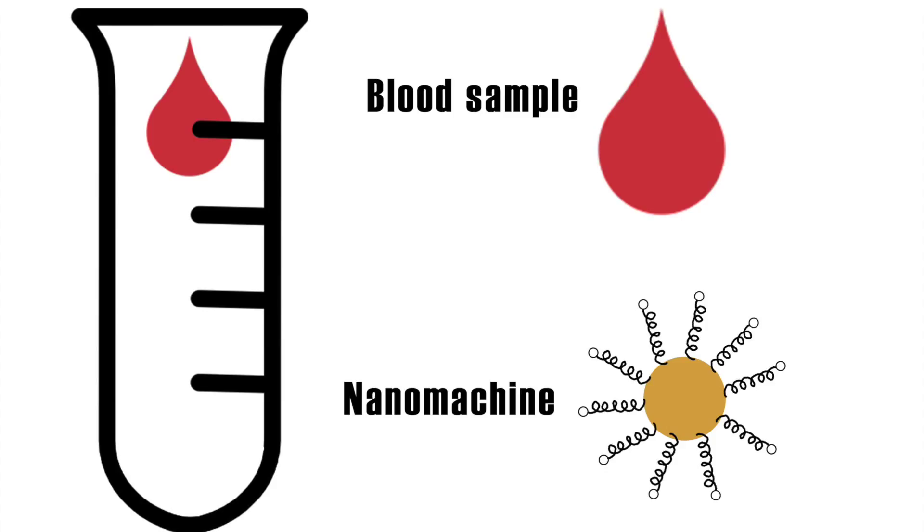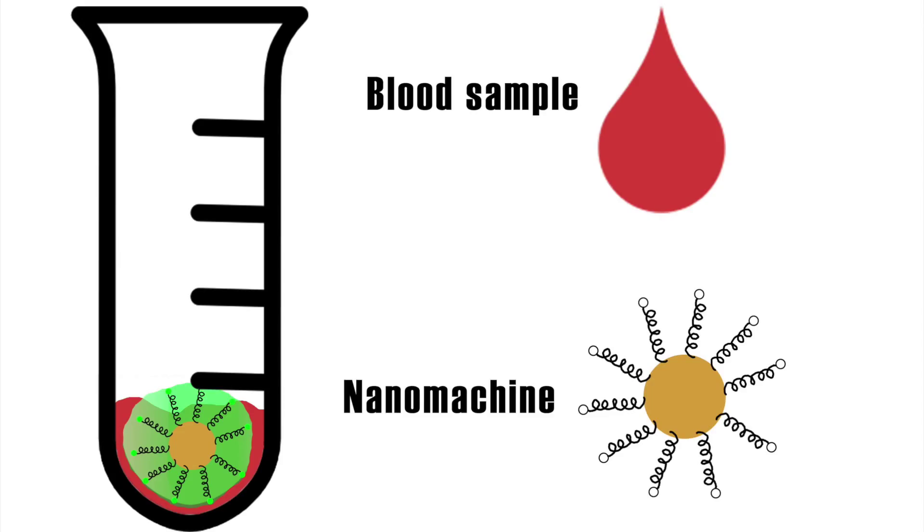At first, the researchers used a healthy human blood sample and added a DNA biomarker that specifically belonged to tuberculosis. Once they add the nanomachine to the blood, if it detects the tuberculosis biomarkers, then approximately 20 minutes later, the nanomachine will start to glow.